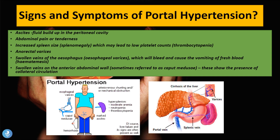The patient will also experience swollen veins in the esophagus called esophageal varices, which can bleed and cause vomiting of fresh blood — hematemesis. The blood within the esophageal wall pools and bleeds into the esophagus, leading to vomiting of fresh blood and very dark stools called melena. The patient will also experience swollen veins on the anterior abdominal wall sometimes referred to as caput medusae, which show the presence of collateral circulation — these channels are visible on the surface of the abdomen.